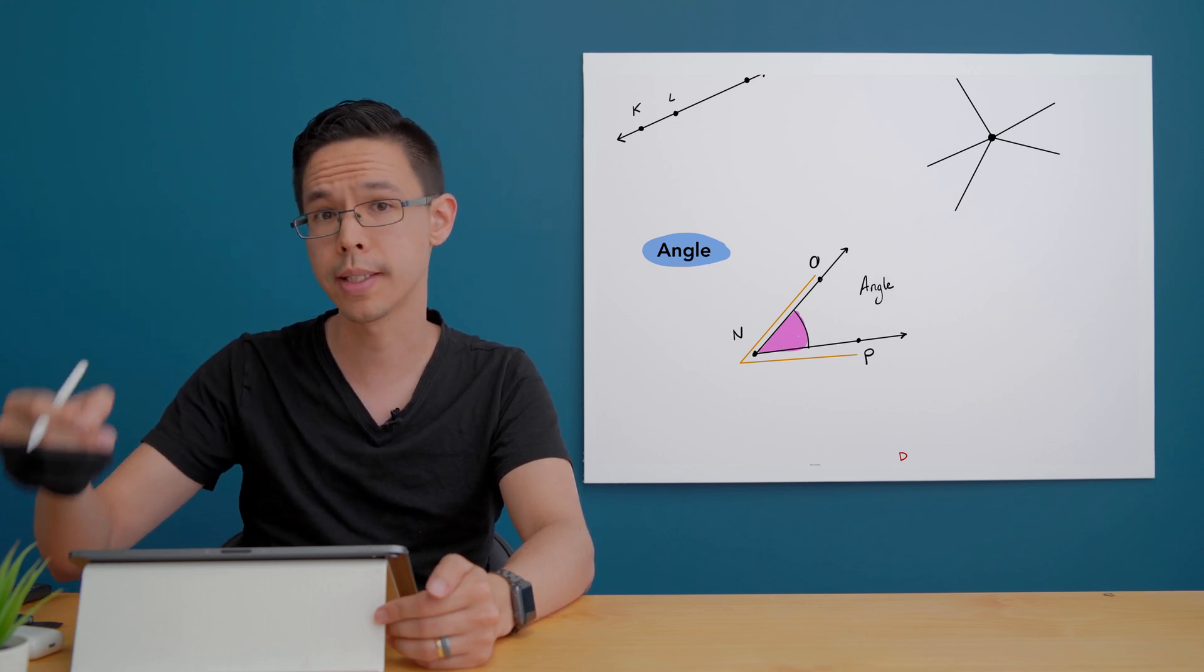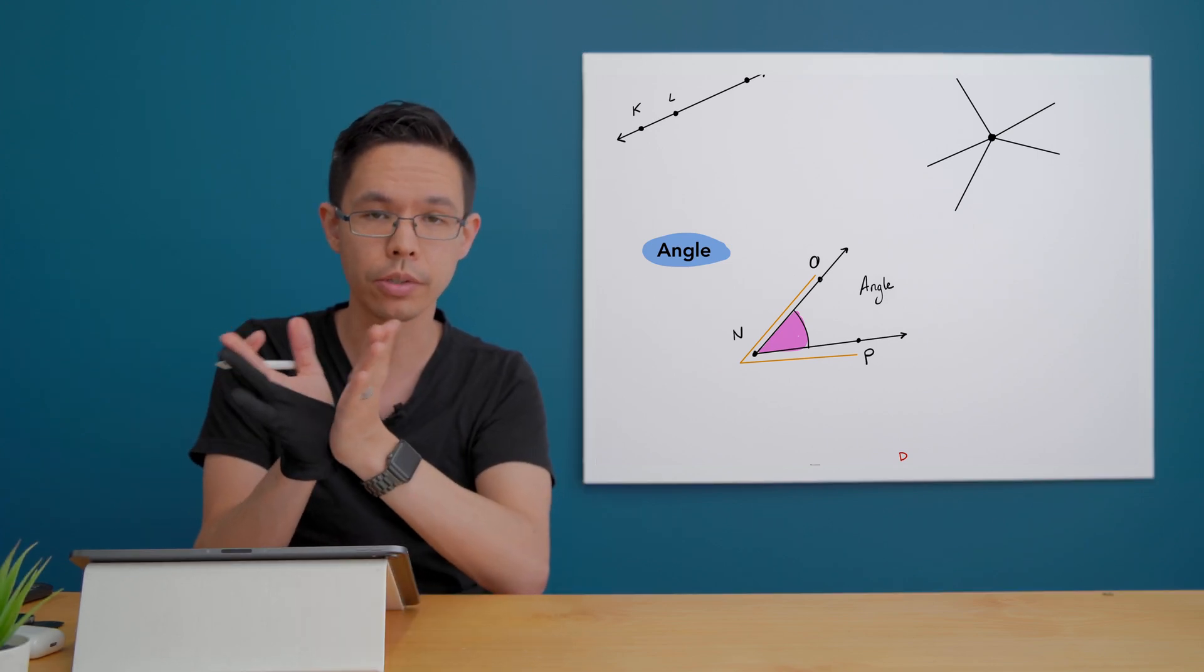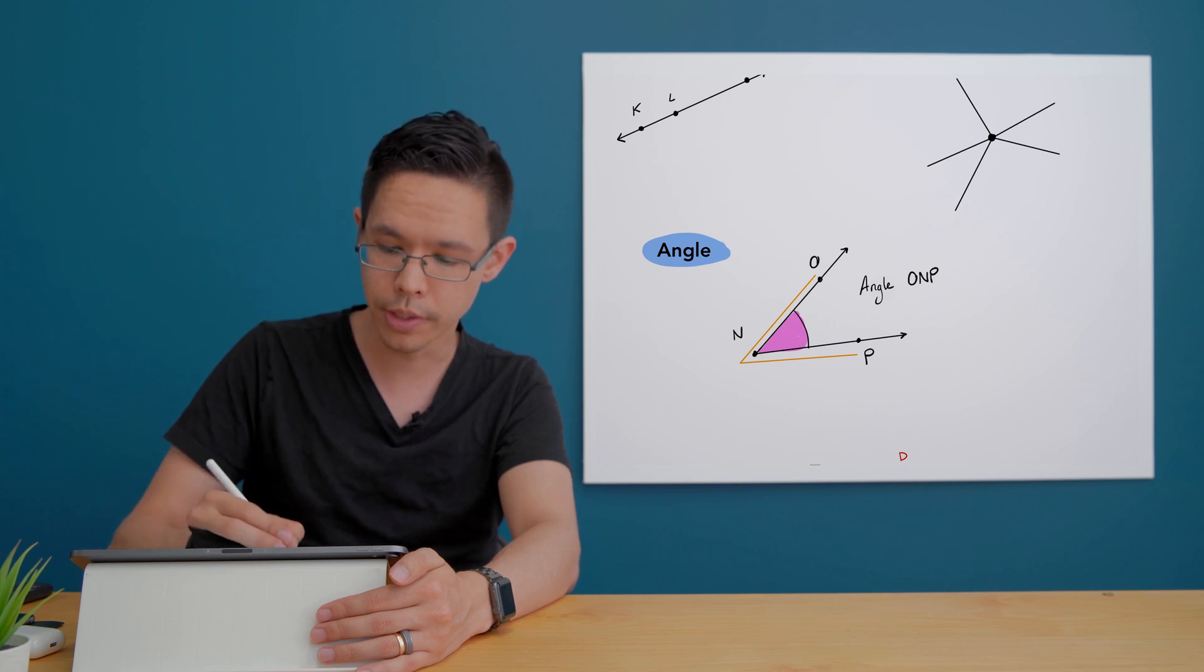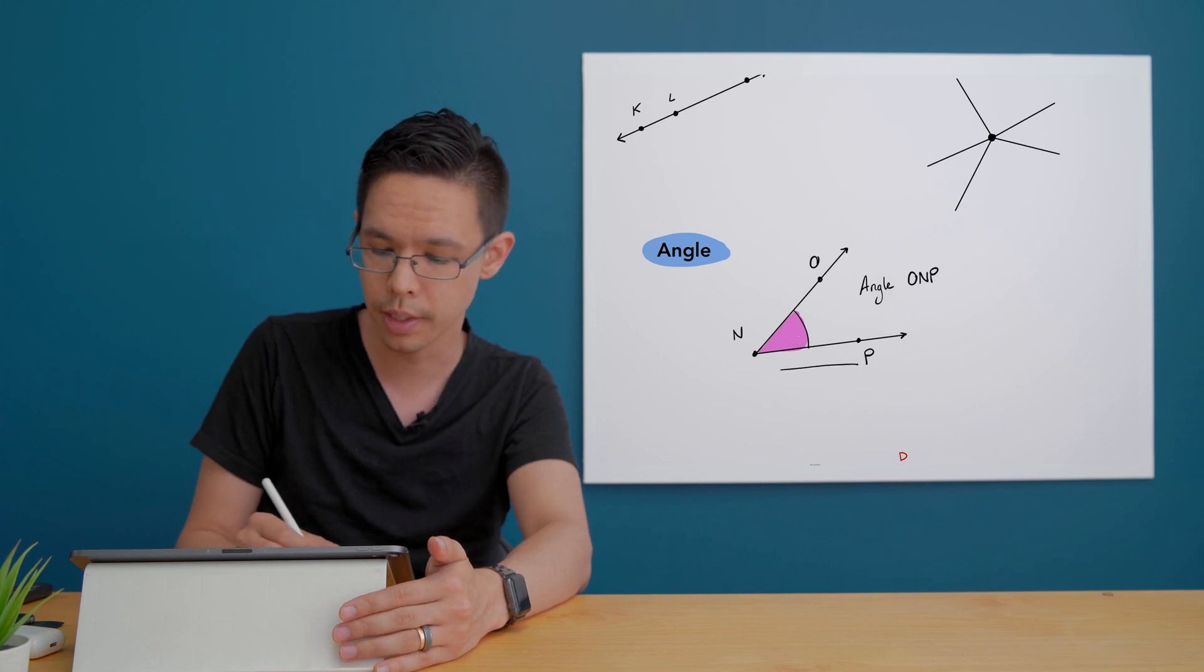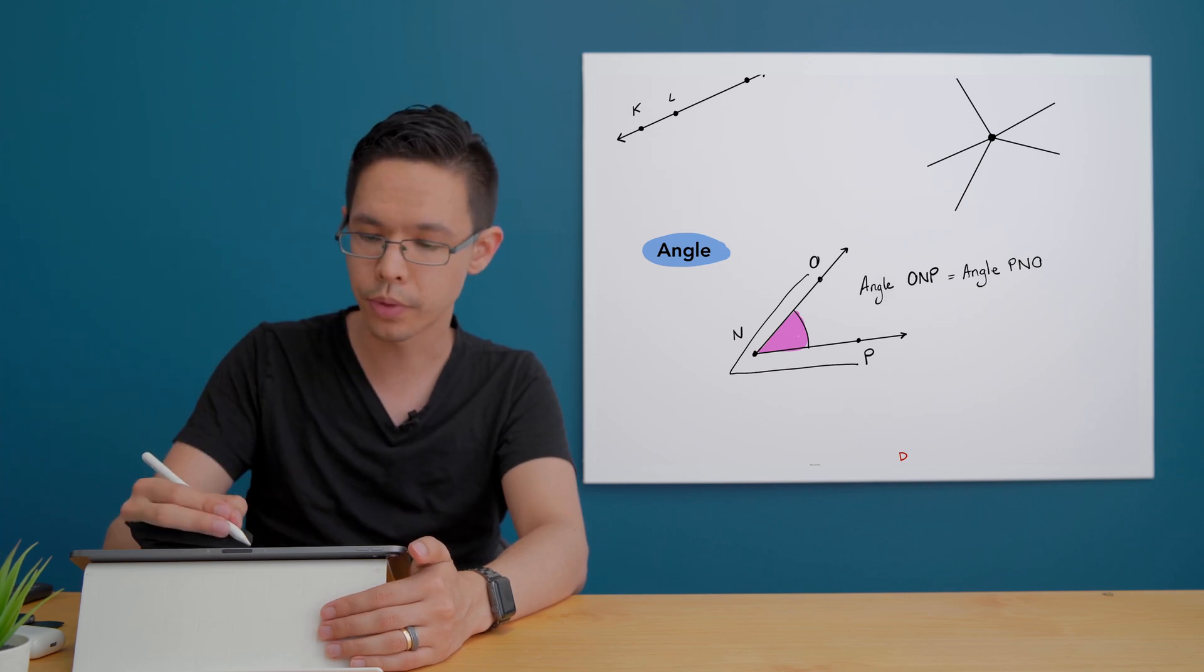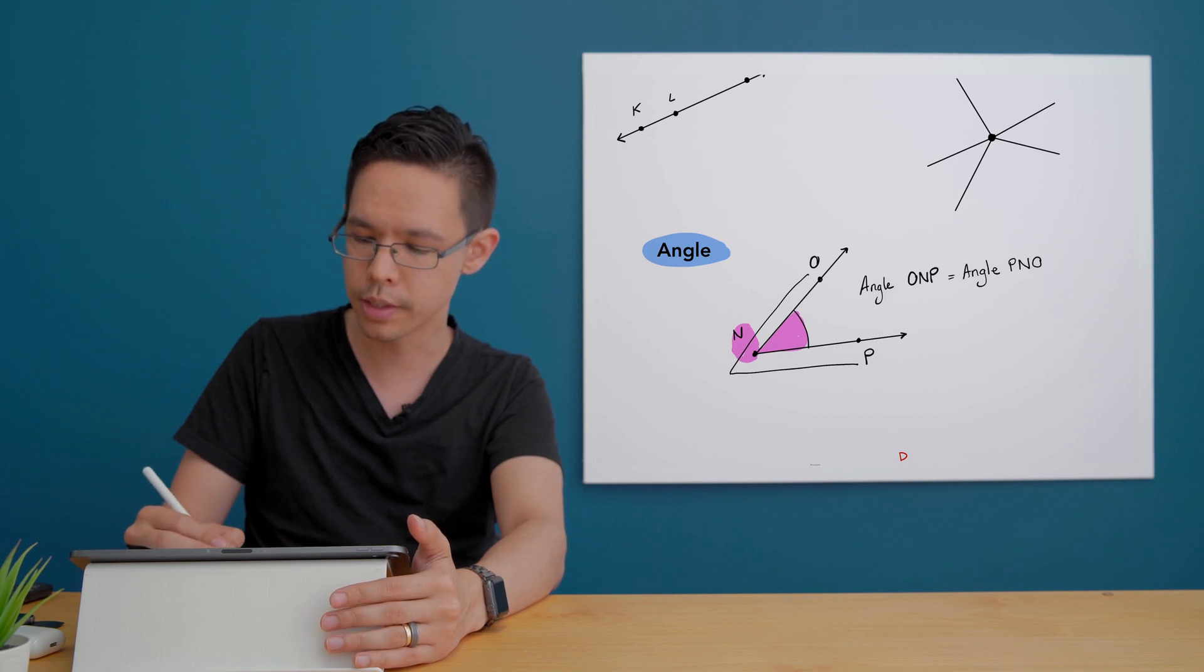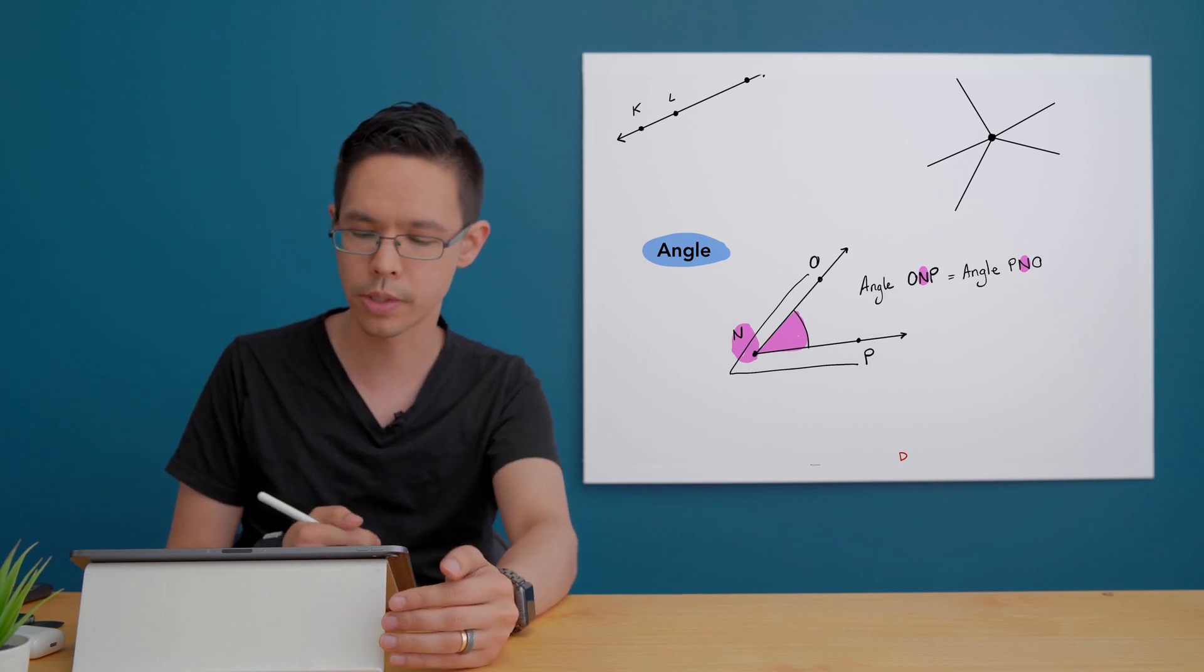So we start from the angle formed by the point O through to the point N and then to the next point P. So the order that I mentioned these letters is actually quite important. It tells me where the center vertex actually is. It's the middle letter in our sequence here. The angle ONP. I could reverse the order of those letters and it still would make sense, the angle PNO.